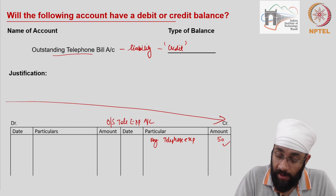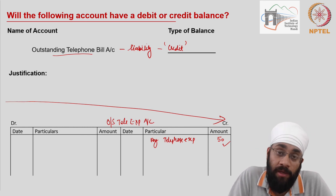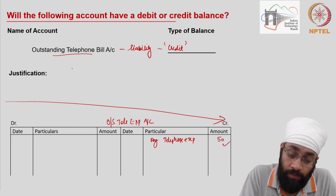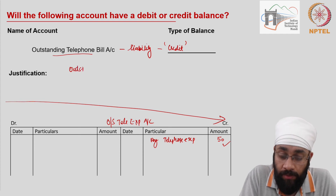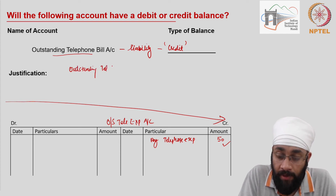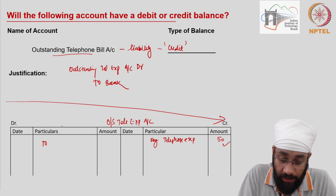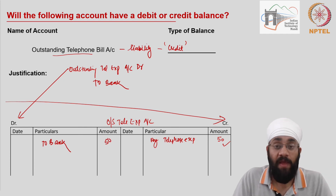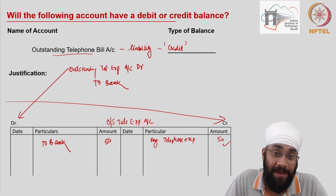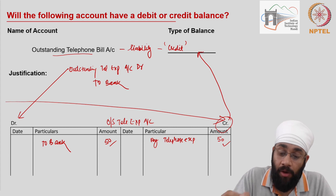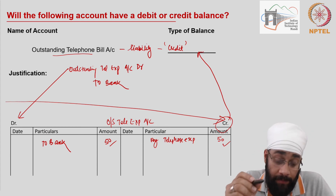The other journal entry posted here is when you actually pay the outstanding expenses. The entry is: outstanding telephone expenses account debit to cash or bank — 50. This is debited on the debit side: to bank or to cash, 50, leaving a nil balance. Until you pay, there will always be a credit balance. All liabilities always have a credit balance in their account.